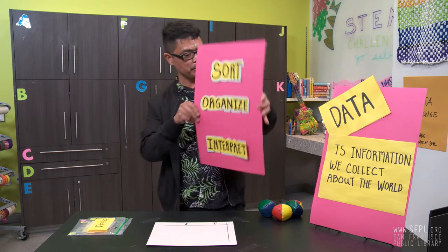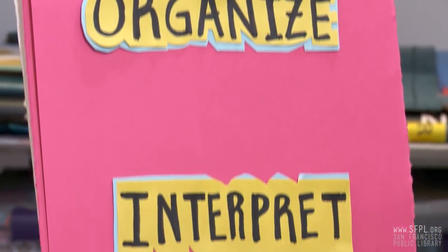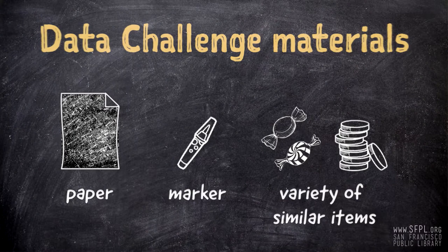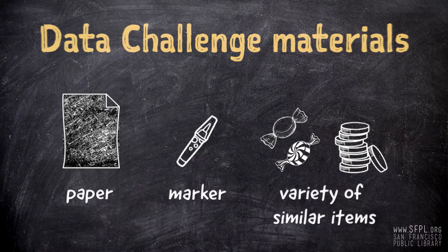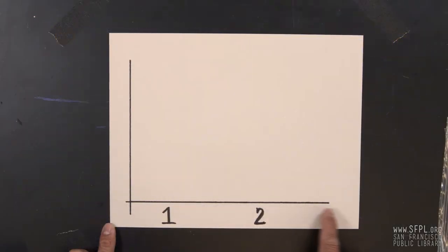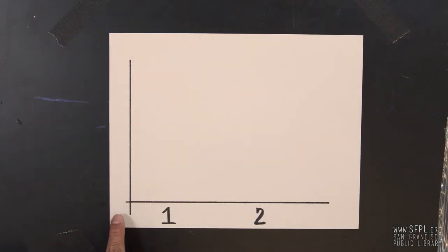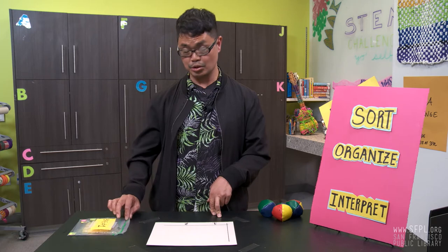If we're going to follow the polling process — sort, organize, interpret, make an interpretation — we need a piece of paper. On that piece of paper we're going to draw two lines. One line is on the long side and the other one is on the short side. Make sure they intersect or meet at the corner, and mark one and two if you have two bags, leaving a space between the numbers. Then you would need your data.